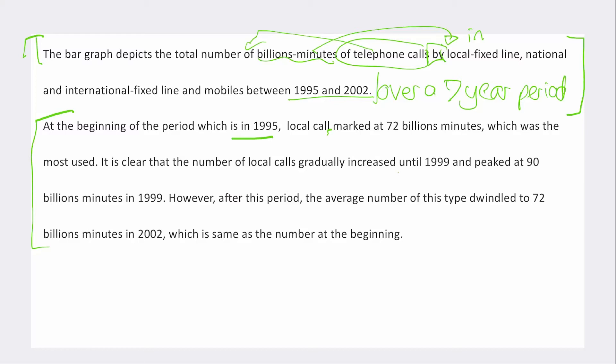However, after this period - so we don't need to say until 1999 and peaked at 90, you've repeated the same information twice. The average number of this type of call dwindled to 72 billion minutes in 2002 which is the same as the number at the beginning. At the beginning of what? At the beginning of the period.